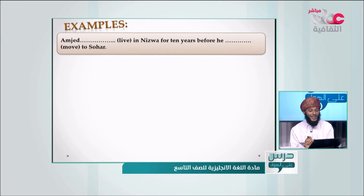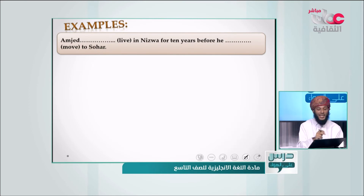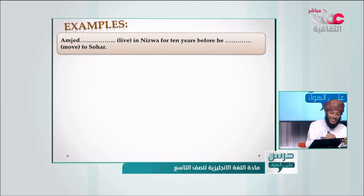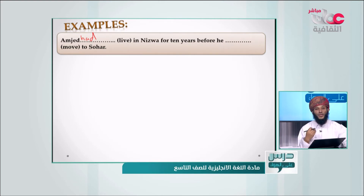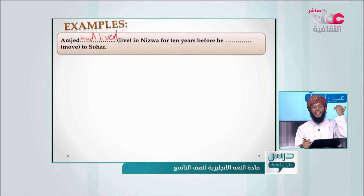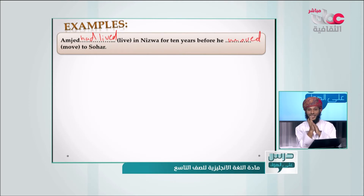Now let's do some practice examples. First: 'Amjad ___ live in Nizwa for 10 years before he ___ to Suhar.' The answer is: 'Amjad had lived in Nizwa for 10 years before he moved to Suhar.' We use 'had lived' — the past participle — and 'moved' in the past simple for the second action.